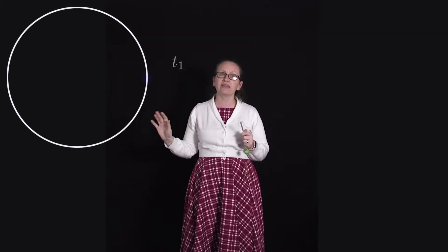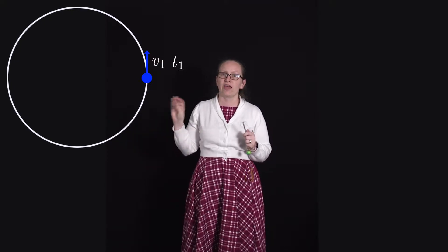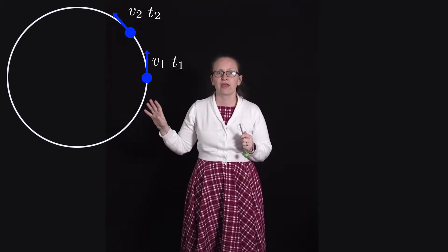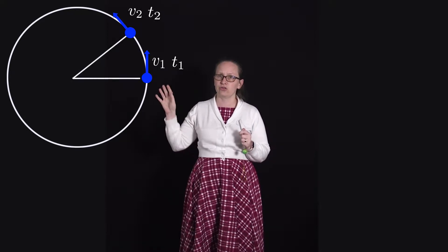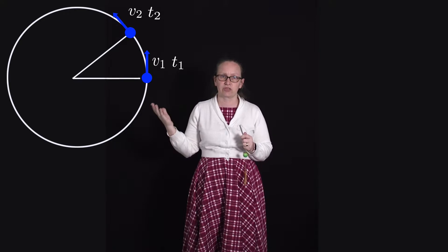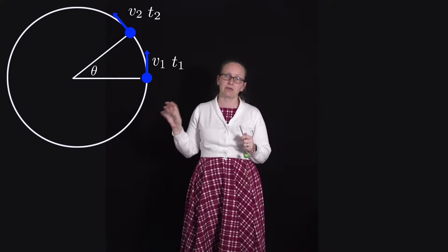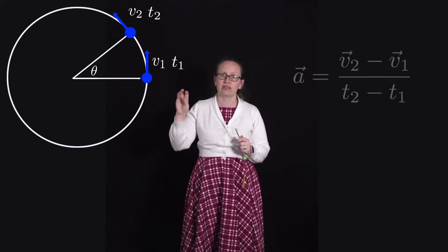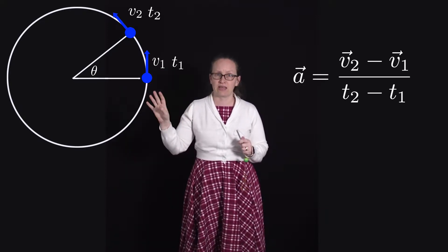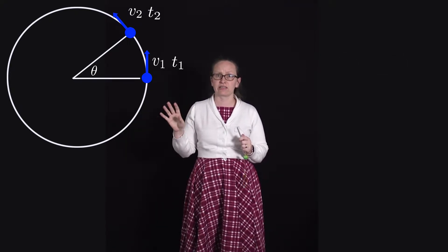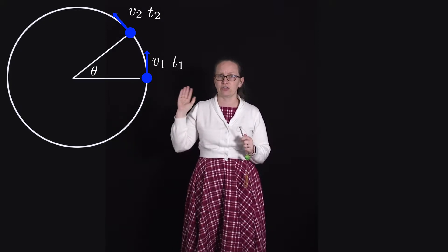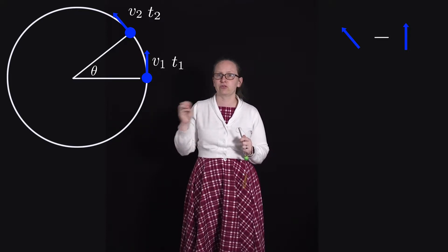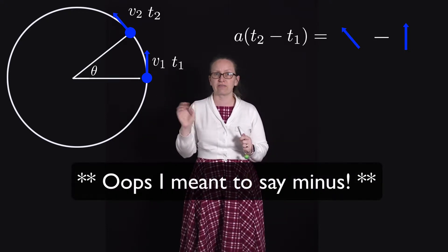Now let's consider the acceleration of an object undergoing uniform circular motion. Consider the dot at two different locations on the circle. At time t1 it has velocity v1, and at time t2, a short time later, it has velocity v2. The angle between these two positions subtended at the center of the circle is theta. To calculate the average acceleration between t1 and t2 we use: acceleration equals v2 minus v1 over t2 minus t1. These are vectors, so for now let's just consider the direction.